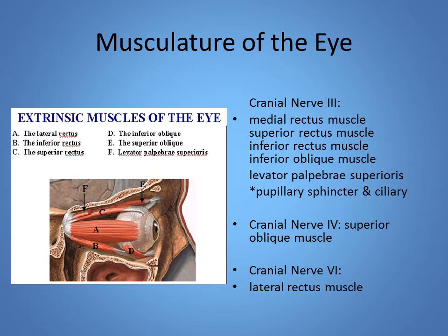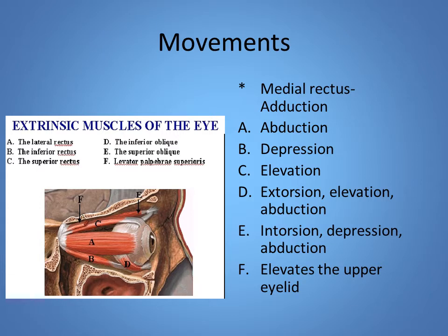The superior oblique muscle is the one that actually pulls your eye downward and inward. This seems counterintuitive because both the superior and inferior oblique work on pulley systems, so they actually move the eye in the opposite direction from what you'd think based on the name. The medial rectus adducts the eye, and the lateral rectus abducts the eye. The inferior rectus depresses the eye, and the superior rectus pulls the eye upward. The inferior oblique causes extorsion, elevation, and abduction, whereas the superior oblique causes intorsion, depression, and adduction.